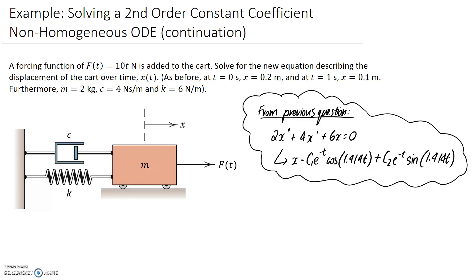This question is going to use aspects of a previous one that was completed that was quite similar. A forcing function f of t equals 10t is applied onto this cart and we need to solve for the new equation describing the displacement of the cart over time, x as a function of time. We're given some conditions that need to be met and also the parameter values, and these are unchanged from that previous question.